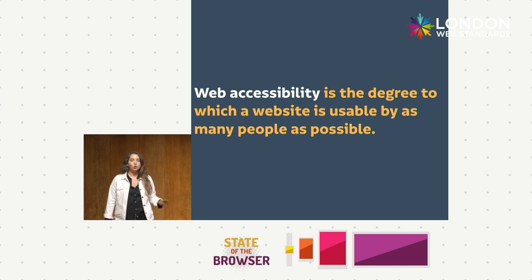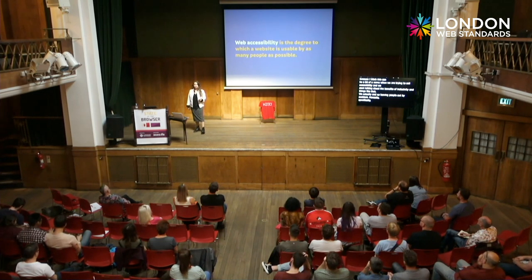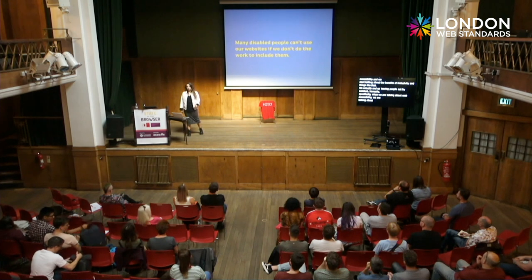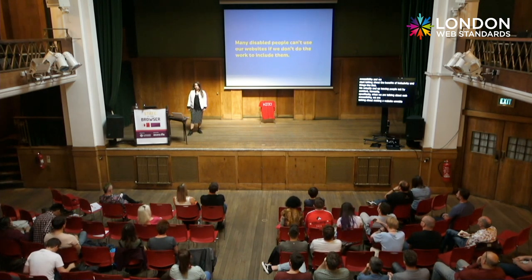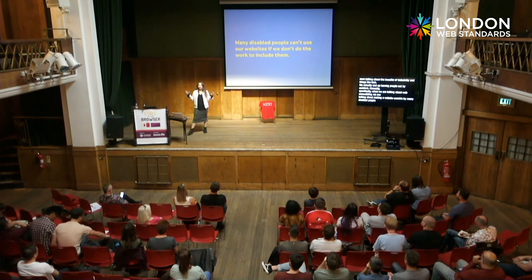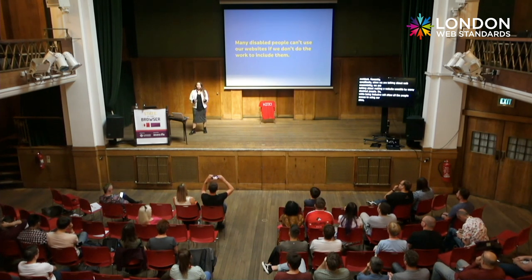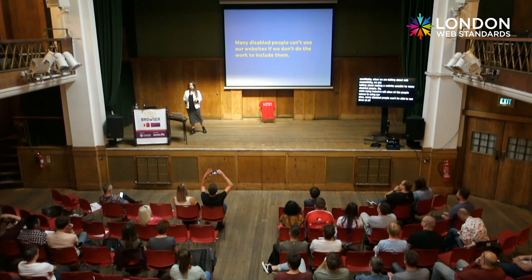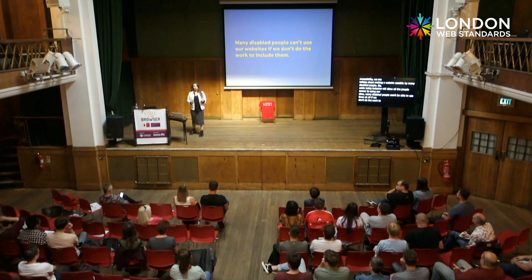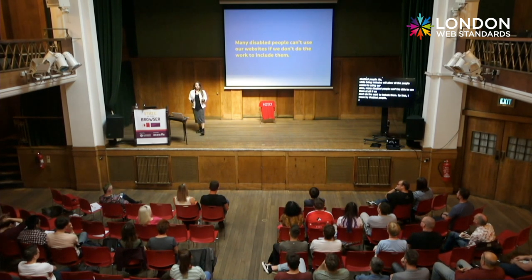I don't want to ignore people's needs by being vague about it, because I think that can be a bit of a worry when we're trying to sell accessibility and we start talking about the benefits of inclusivity. We actually end up leaving people out by accident. Honestly, specifically, when we are talking about web accessibility, we are talking about making a website usable by many disabled people — people whose impairments can affect the use of the web.